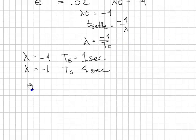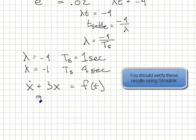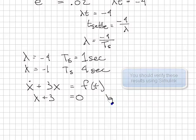Quick example. Given the differential equation x dot plus 3x is equal to f of t, how can I characterize the transient response of that system? Well, I do that by finding the roots of the characteristic equation. That's lambda plus 3 is equal to 0, or lambda is equal to minus 3.